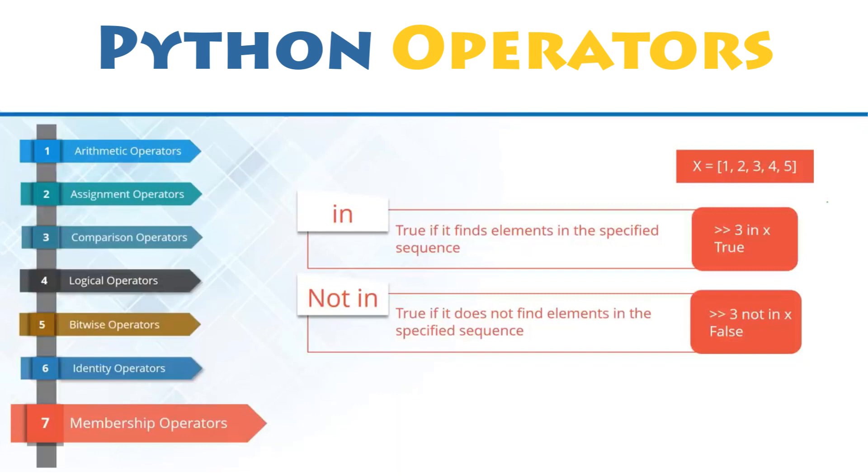For instance, if a value 3 is found in the list X equals 1, 2, 3, 4, 5, the statement 3 in X will return true.